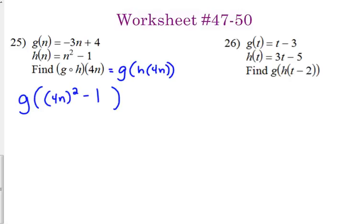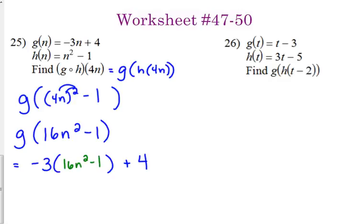Don't forget, when you're squaring something like 4n, you have to square both the number and the variable. So, this is going to be g of 16n squared minus 1. Then, we plug that into our g of n function, which was negative 3 times the variable, which is going to end up being our function, plus 4. So, that's negative 48n squared plus 3 plus 4. So, that is negative 48n squared plus 7.